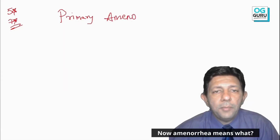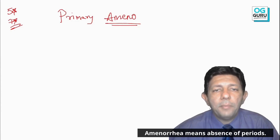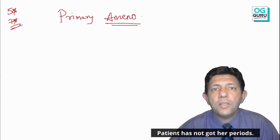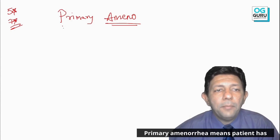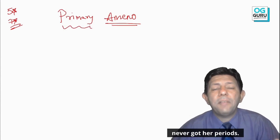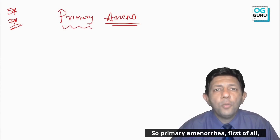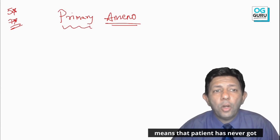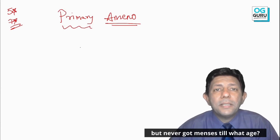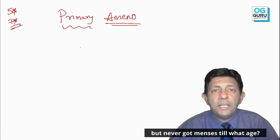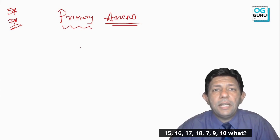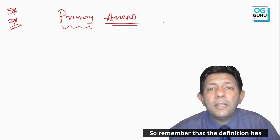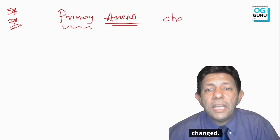Amenorrhea means absence of periods. Primary amenorrhea means the patient has never got her menses — but never got menses till what age? 15, 16, 17, 18? Remember that the definition has changed.